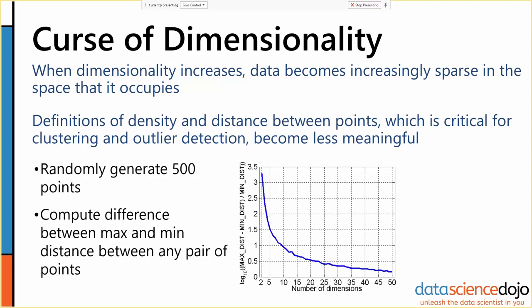A great illustration of this is if we randomly generate 500 points in an n-dimensional space and compute the difference between the maximum distance between any pair of points and the minimum distance between any pair of points. This has been normalized and a log taken to make it look pretty.